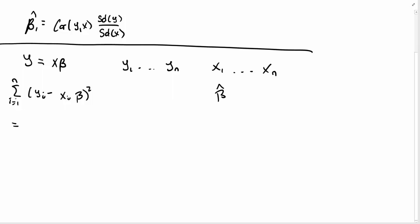So this equation here is equal to the summation i equal 1 to n yi minus xi beta hat plus xi beta hat, simply because I've just added 0 minus xi beta squared. All I've done is add 0.